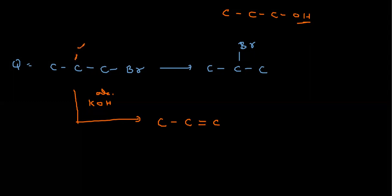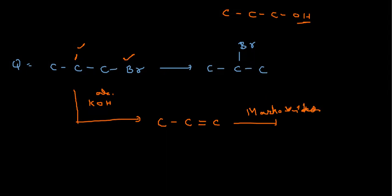Hydrogen is getting removed from one side and bromine from the other side. Now we want Br at the secondary carbon, so of course we conduct Markovnikov addition. Markovnikov says the negative part comes to the side where hydrogen number is less. So Markovnikov addition — we are not taking peroxide here, because peroxide is only used for anti-Markovnikov. So Br is coming to the secondary carbon only. This is how we conduct this conversion.